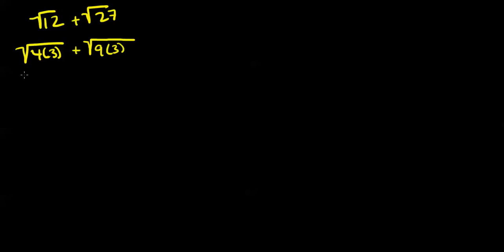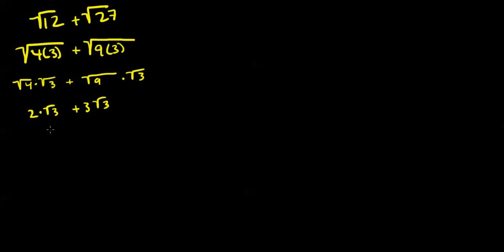Now we can go ahead and simplify. We can split them both up into individual radicals: radical 4 times radical 3, plus radical 9 times radical 3. The radical of 4 gives us 2, so we have 2 times square root of 3 plus 3 times square root of 3. They're like radicals, so we add them: 2 plus 3 gives us 5, and we're left with 5 radical 3.